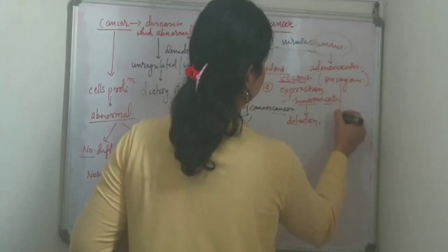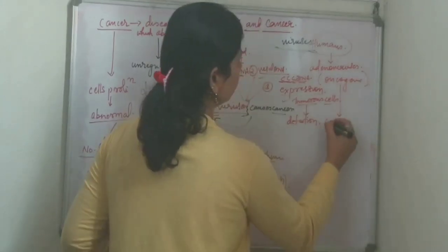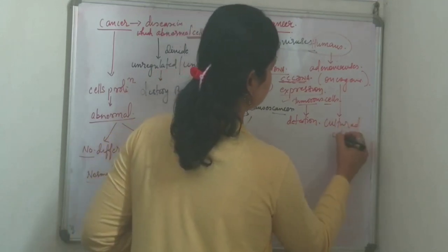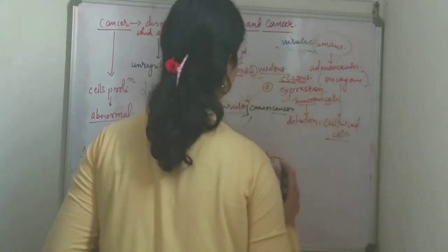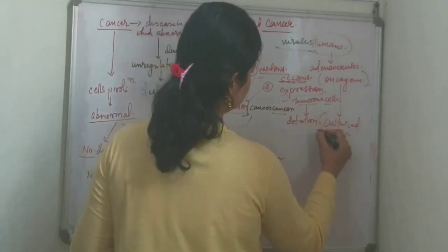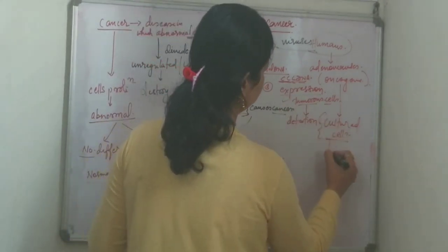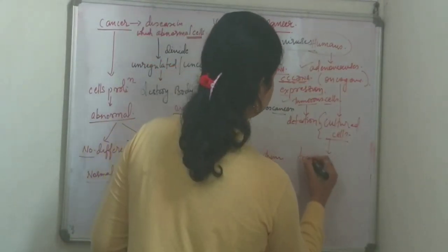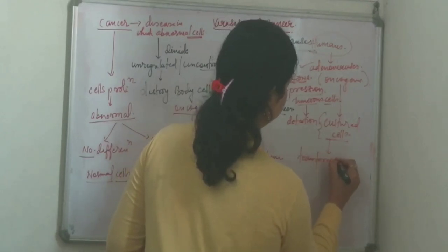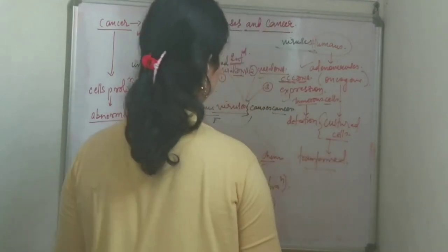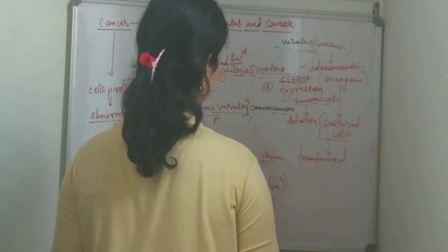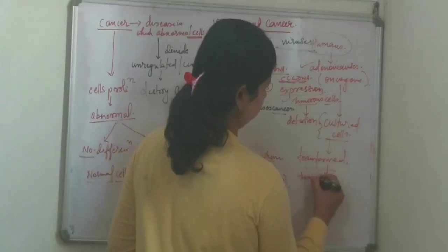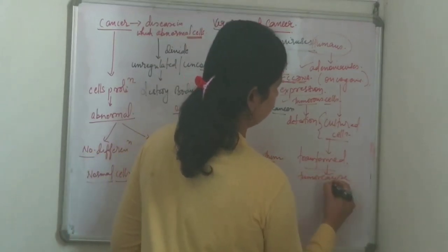It has been seen that when cells are cultured in vitro and when those cultured cells are transformed, after transformation they cause tumors. They cause tumors when inoculated into animal cells.